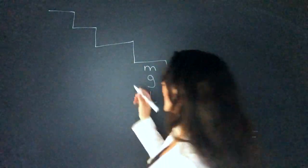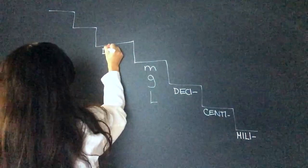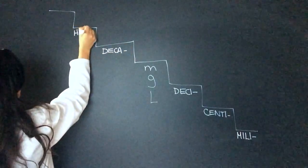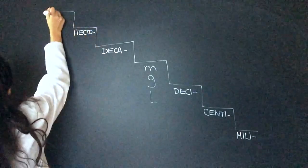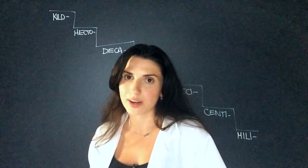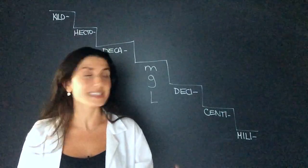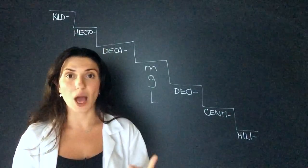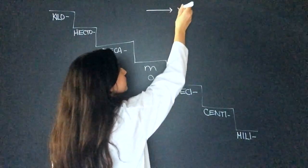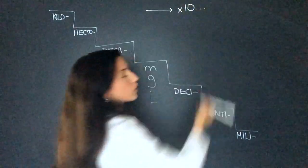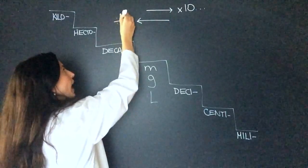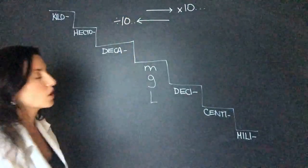Now going up, we have decca here, hecto here, and kilo here. Kilo is obviously our most used one. The way I use this ladder is every step is a multiple of 10. When I'm going down the table, I multiply by the 10 or 100 or 1,000. And when I'm going up the table, I divide by the factor of 10.